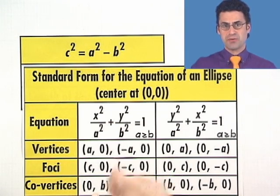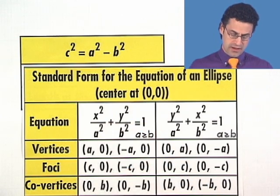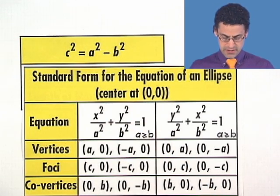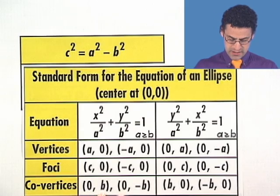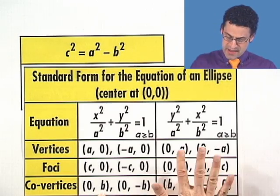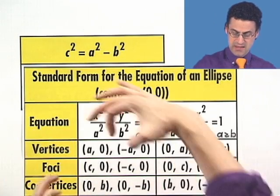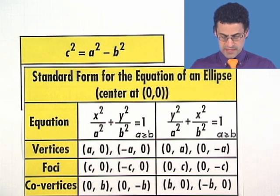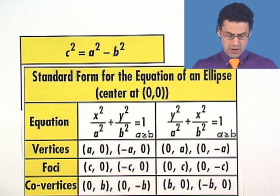And the co-vertices, that's sort of what's going on in the part of the ellipse that's closest to the center point is at zero b and zero negative b. And then everything is switched around if in fact the ellipse is put on its side.